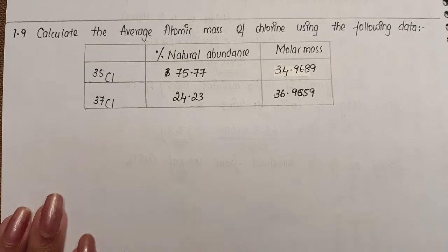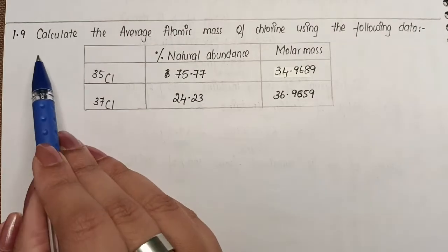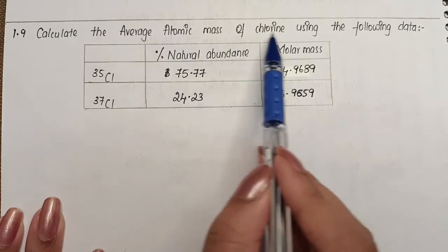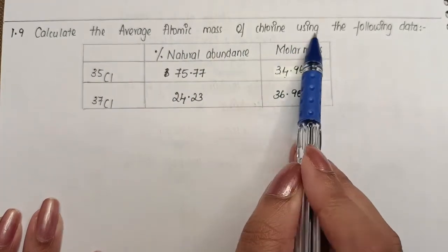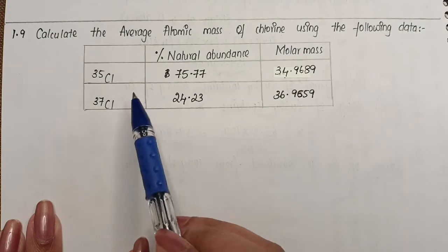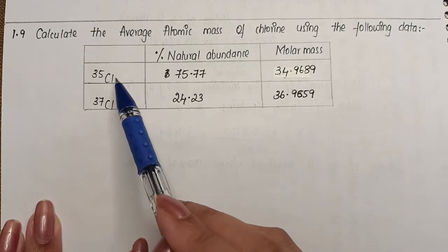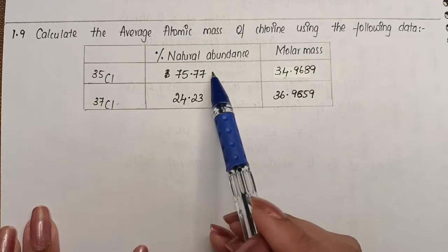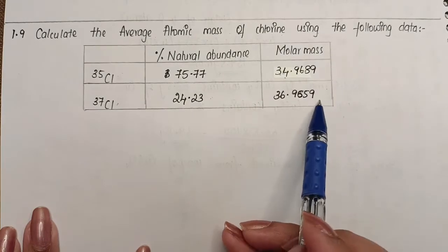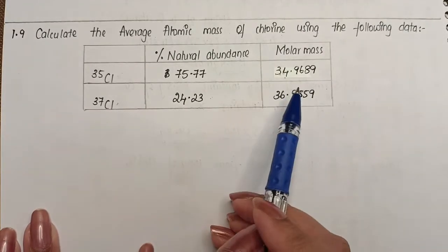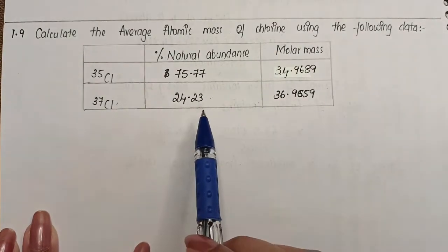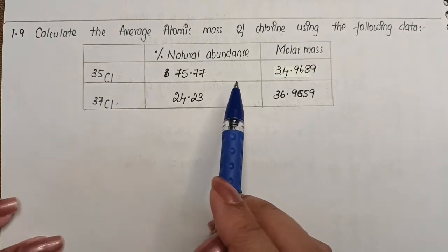Our next question is 1.9 from the NCERT book: calculate the average atomic mass of chlorine using the following data. They've given us a table with two isotopes, their natural abundance and molar mass. Keeping this information, you have to find the average atomic mass for chlorine, so here I have a formula for average atomic mass.